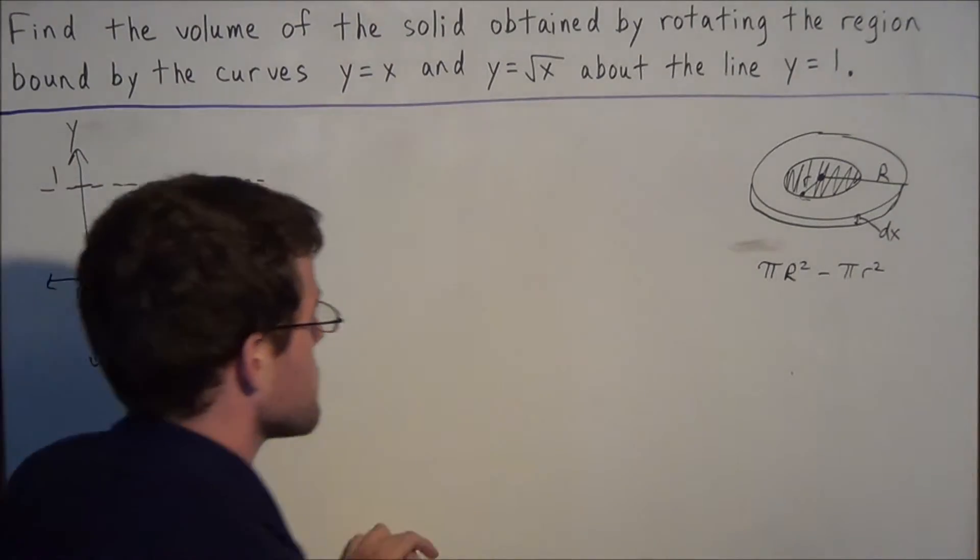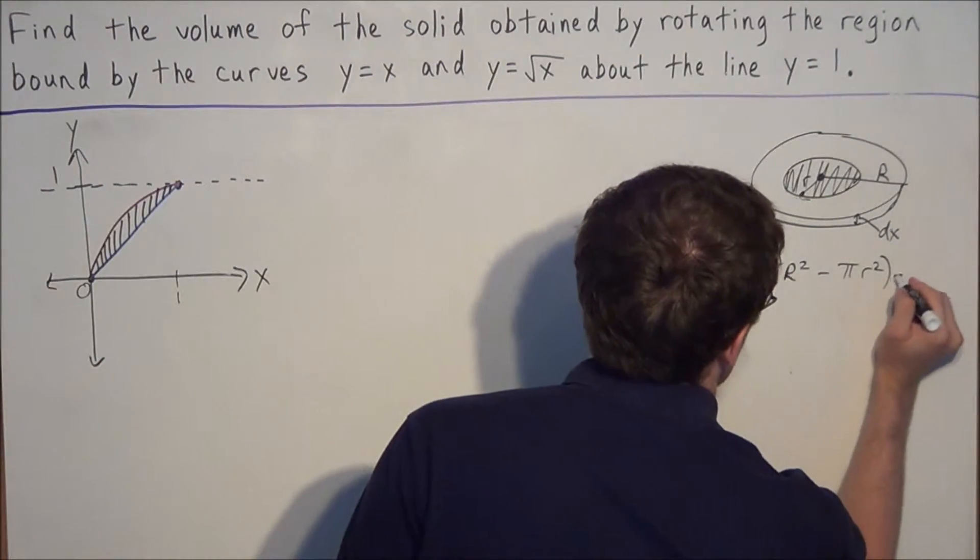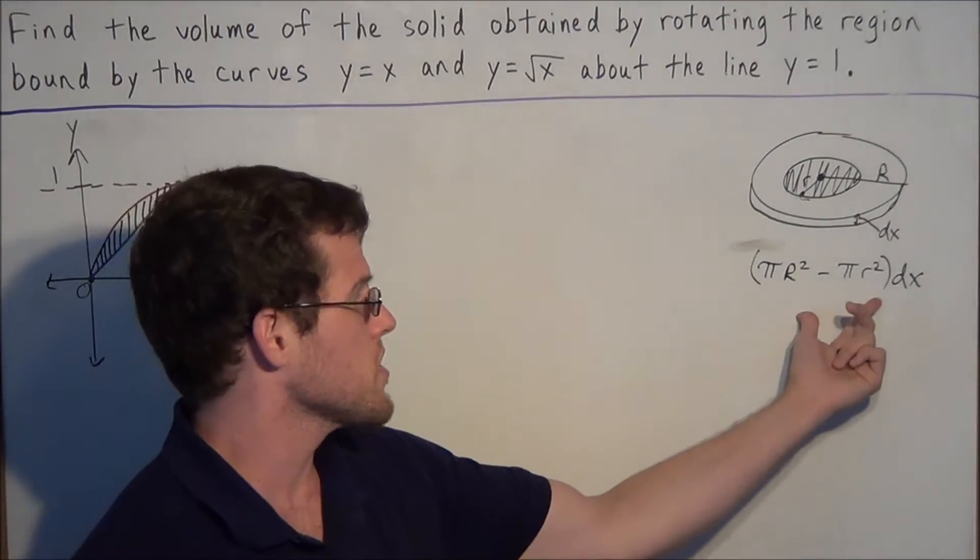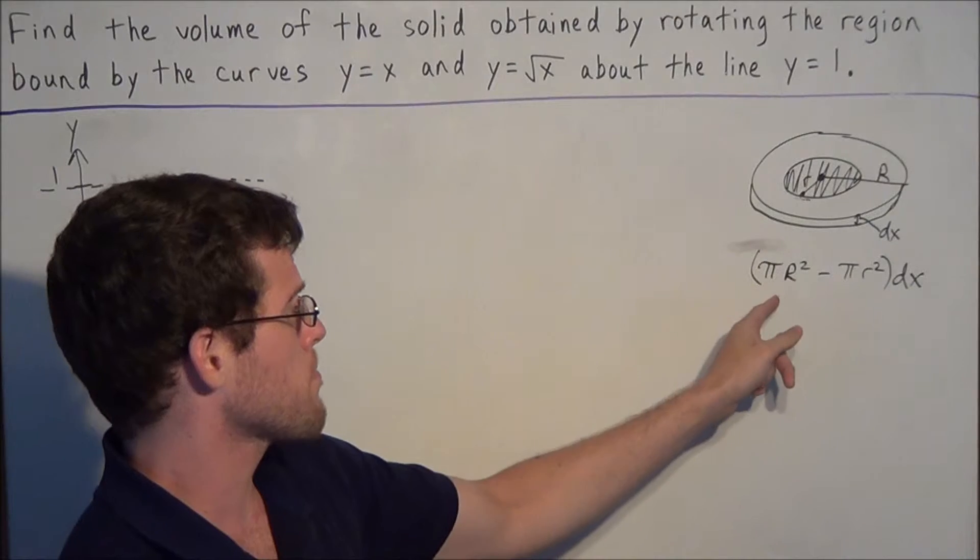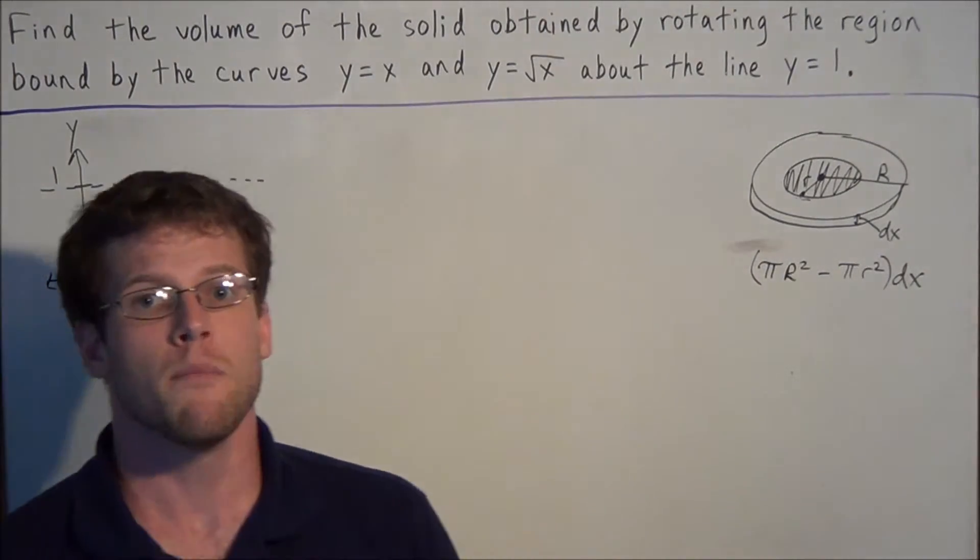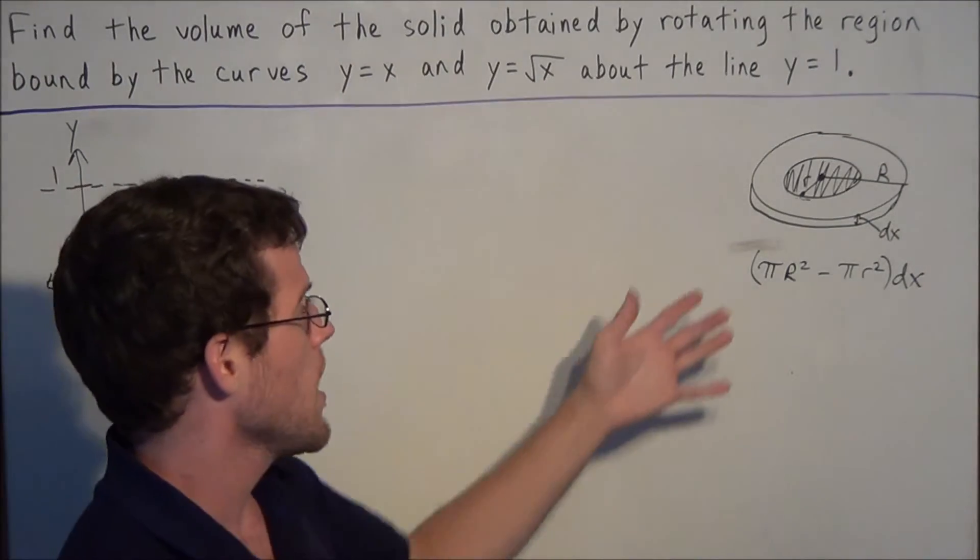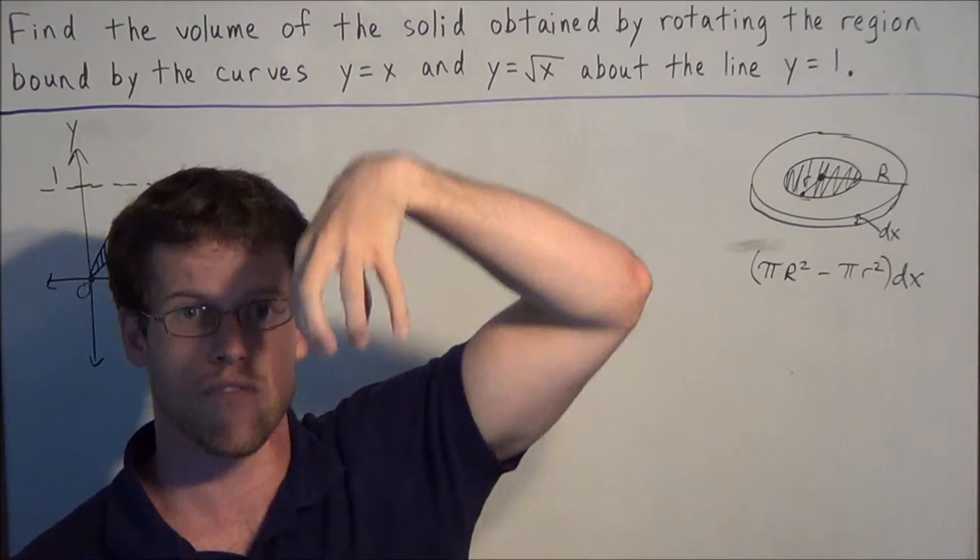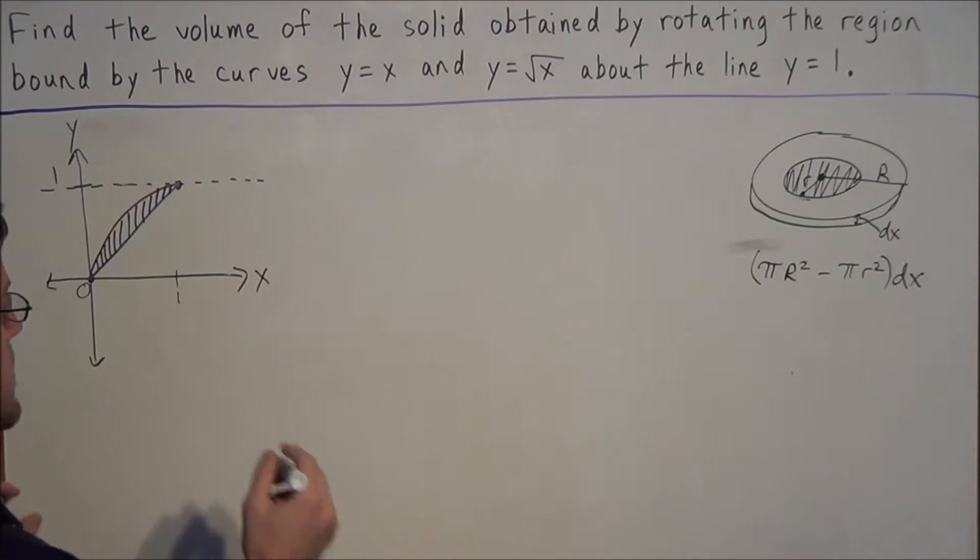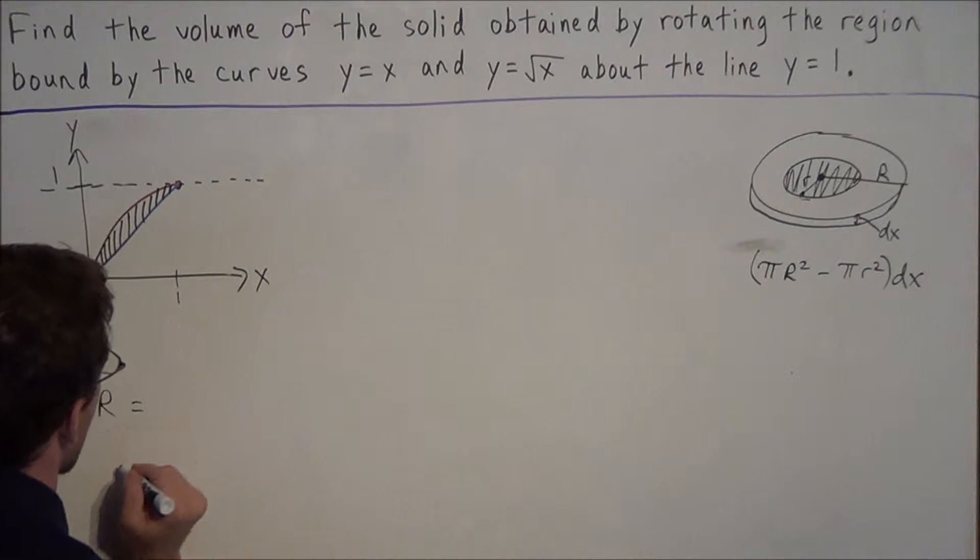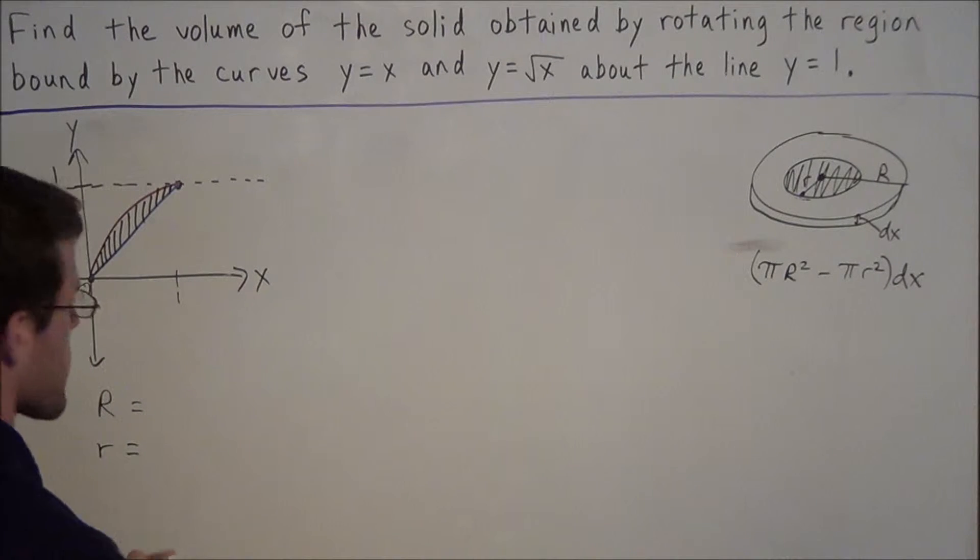So the strategy here, to find the volume of these little disks, we're going to be using this equation here: that we have π capital R squared minus π lowercase r squared, all this times dx. But it's in some sense just replacing this idea of a cylinder, but we're just kind of cutting out the center of the cylinder.